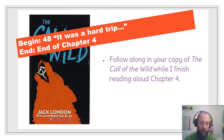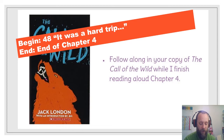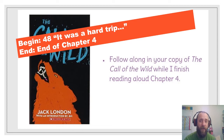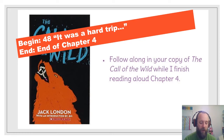The half-breed tried to drive him away with the whip, but he paid no heed to the stinging lash, and the man had not the heart to strike harder. Dave refused to run quietly on the trail behind the sled where the going was easy, but continued to flounder alongside in the soft snow where the going was most difficult, till exhausted. Then he fell and lay where he fell, howling lugubriously — that means mourning, very sad — as the long train of sleds churned by. The last remnants of his strength he managed to stagger along behind, till the train made another stop, when he floundered past the sleds to his own, where he stood alongside Solex.